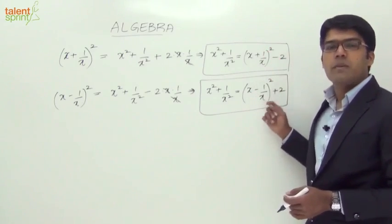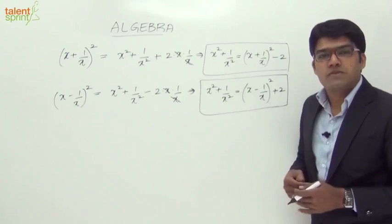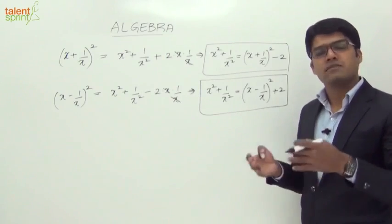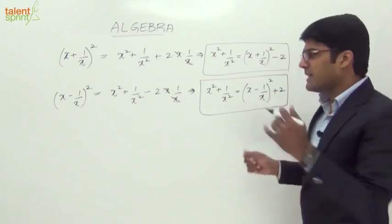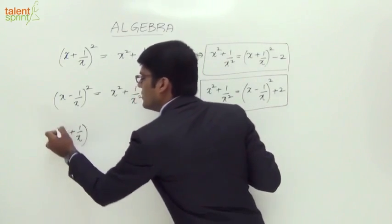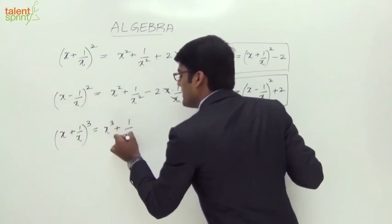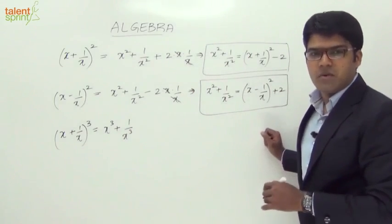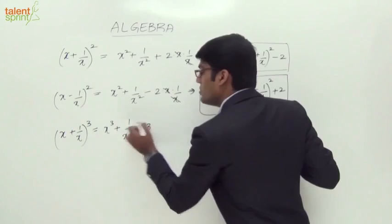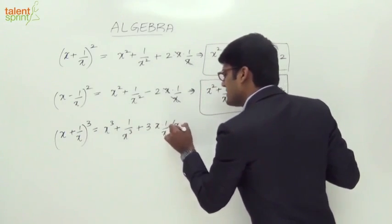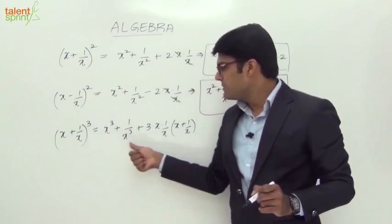So x² + 1/x² equals (x + 1/x)² - 2 or (x - 1/x)² + 2. Likewise, how do we get x³ + 1/x³? Generally x + 1/x or x - 1/x value is given and we need to find x³ + 1/x³. Let's expand (x + 1/x)³: we get x³ + 1/x³ plus 3a²b + 3ab², which is 3ab into (a + b), where a + b is x + 1/x.